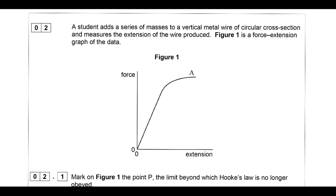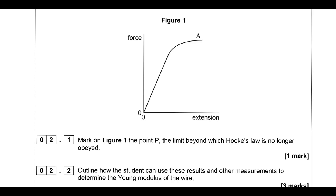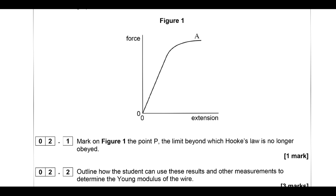We're going to add a series of masses to a vertical metal wire with a circular cross-section and look at how the force changes the extension. The first thing is to mark point P - the limit beyond which Hooke's law is no longer obeyed. Hooke's law states that force and extension are directly proportional up to the limit of proportionality, so that law ends when the graph stops being a straight line. We mark the point somewhere around here where it stops being straight.